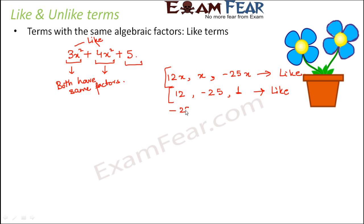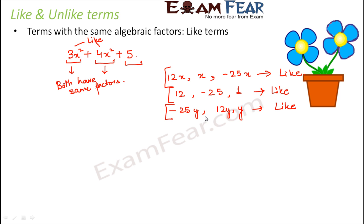If you talk about minus 25y, 12y, and y, these are again like terms because all of them have the same algebraic factor, y. So this is how we identify which terms are like terms.